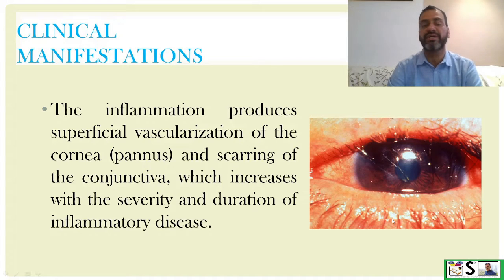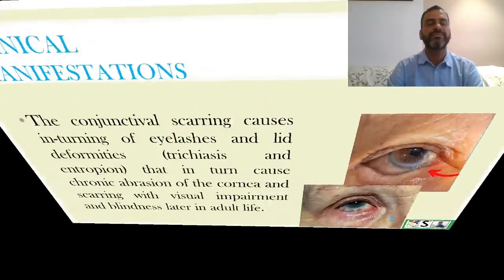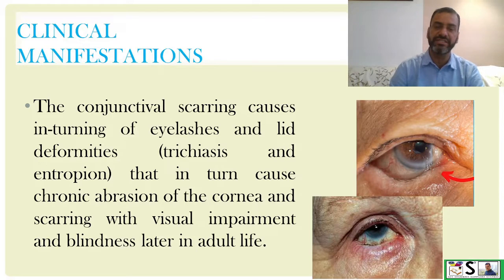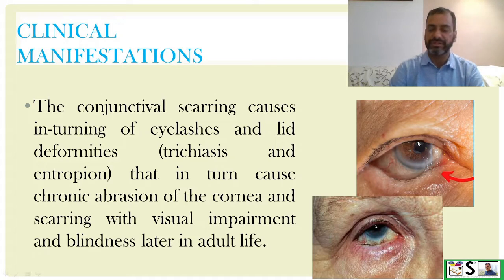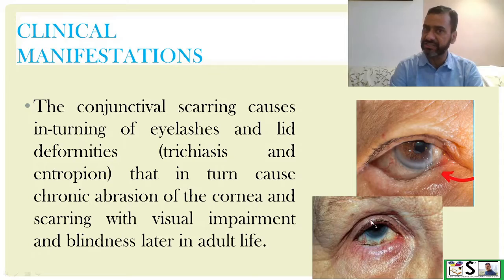Scarring of the conjunctiva increases with the severity and duration of the disease. The conjunctival scarring causes inturning of the eyelashes and lid deformities, that is trichiasis and entropion. This in turn causes chronic abrasion of the cornea, scarring, and even visual impairment and blindness in later adult life.